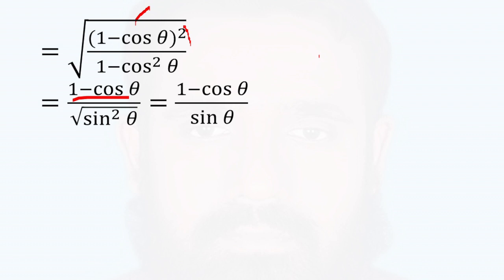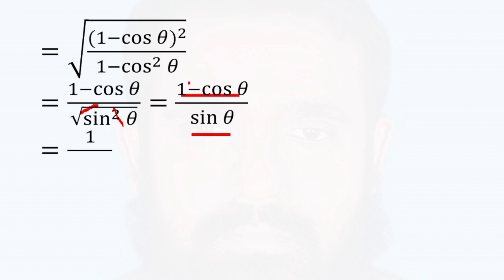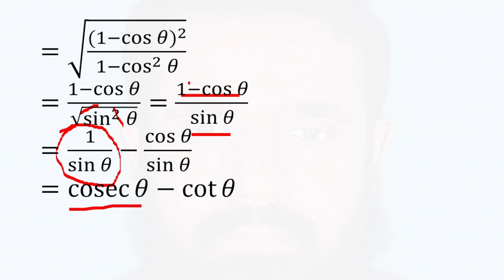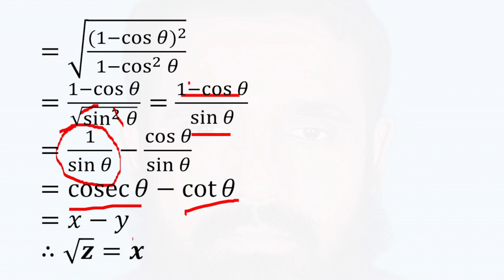Let's start with sin squared theta. So the expression becomes 1 minus cos theta by sin theta. That is 1 by sin theta minus cos theta by sin theta, which is cosec theta minus cot theta. So this gives us cosec theta minus cot theta, which equals x.